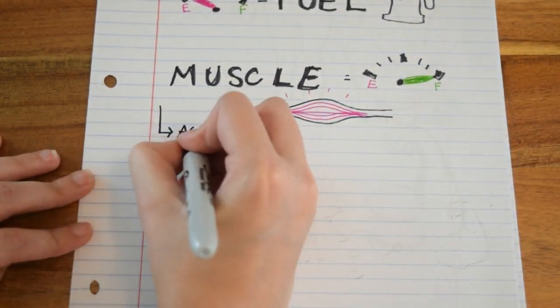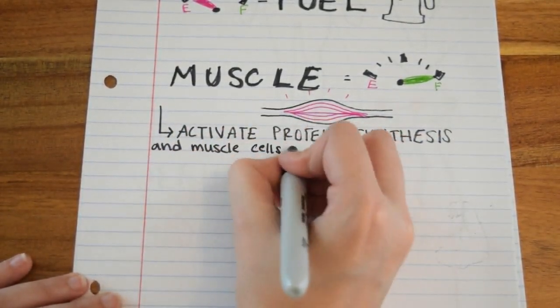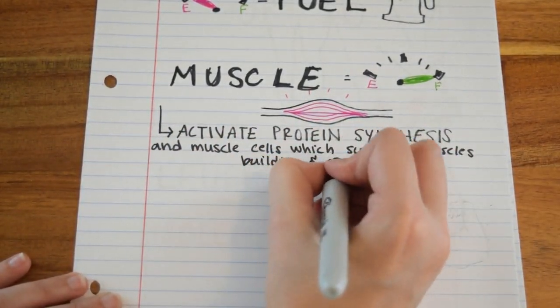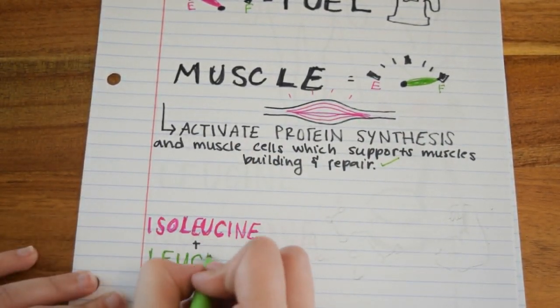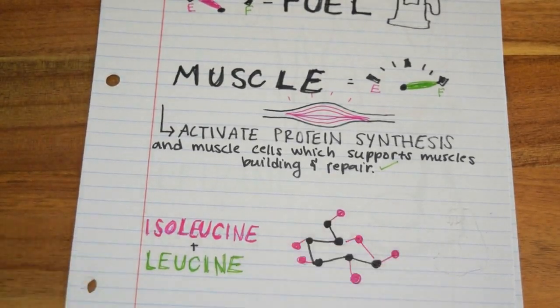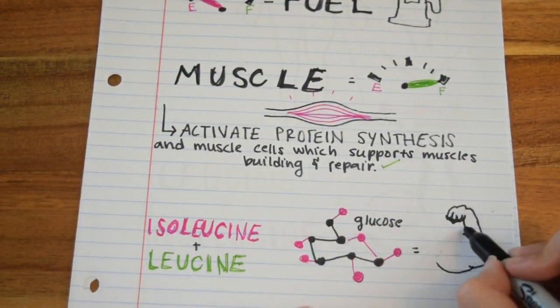Your body then uses leucine to activate protein synthesis in muscle cells, which supports muscle building and repair. Isoleucine works with leucine by stimulating the muscle to absorb glucose from the bloodstream, which fuels the muscle building process.